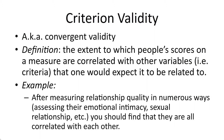Then there's criterion validity, also called convergent validity. This refers to the extent to which people's scores on a measure are correlated with other variables we would expect them to correlate with. For example, if you develop a measurement of relationship quality, we would expect it to also correlate with the quality of a sexual relationship and emotional intimacy, because all those things tend to go together. If your operational definition is accurate, it should capture all of those converging variables.